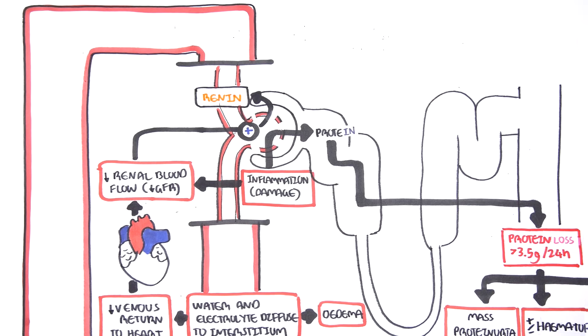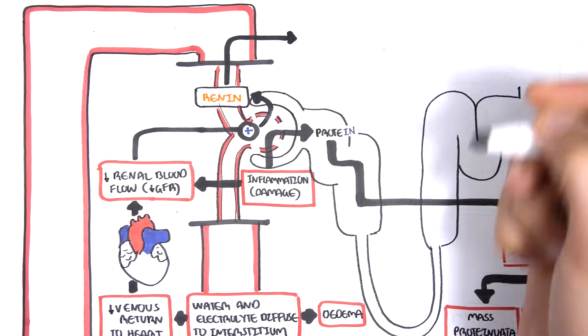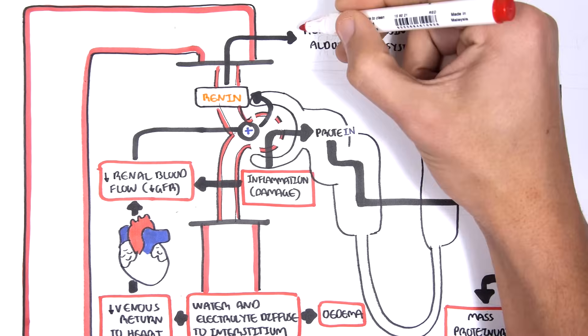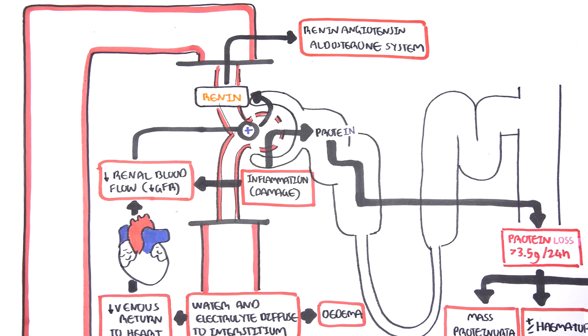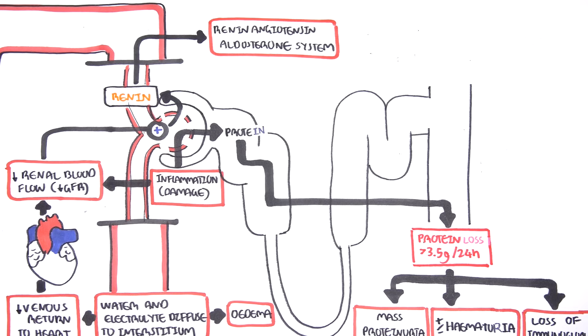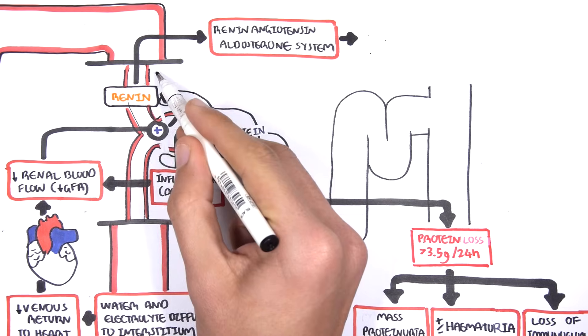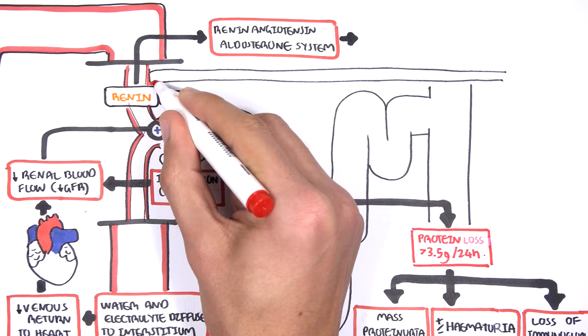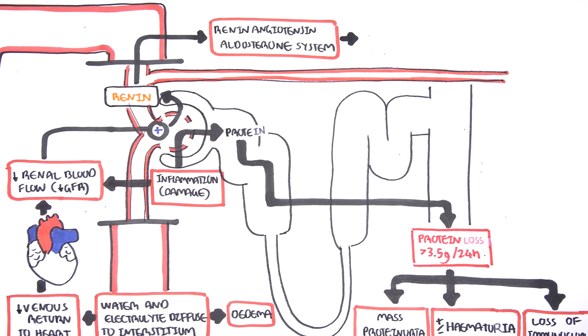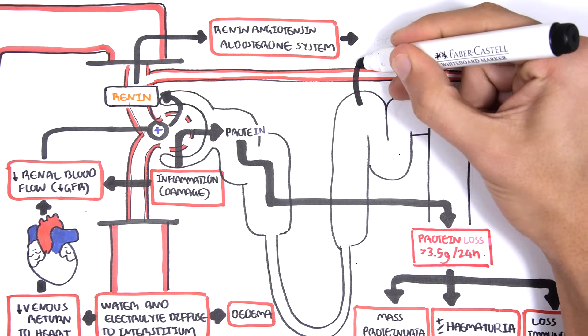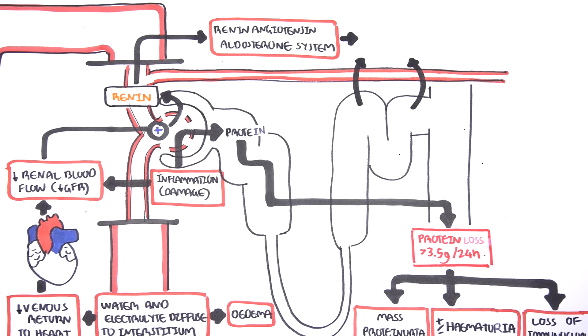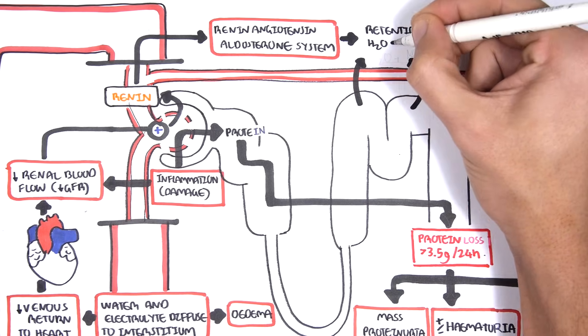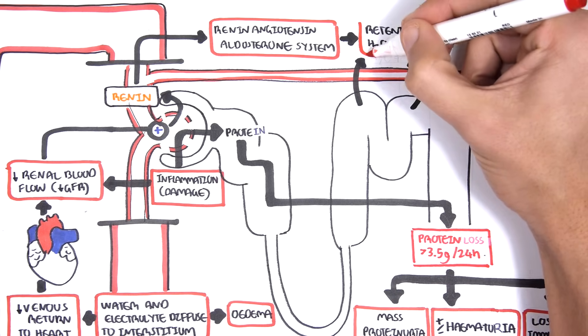Renin is important and activates the renin-angiotensin-aldosterone system. The function of the renin-angiotensin-aldosterone system is to increase blood pressure to compensate for the decrease in vascular volume and GFR. It does this by retaining sodium and thus water from the kidneys to maintain it in the vascular space.